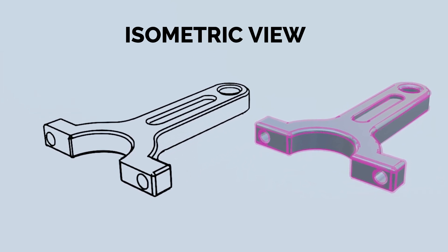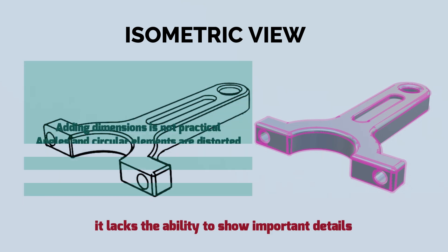Although the isometric view is best for giving a quick visualization of the part, it lacks the ability to show important details. If you try to add dimensions to the ISO view, it quickly becomes crowded with information.